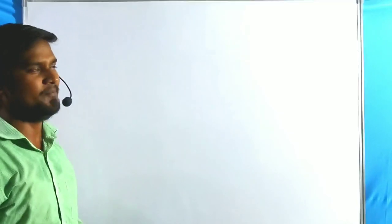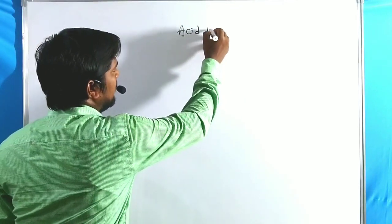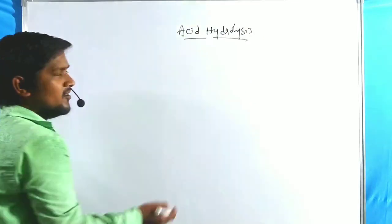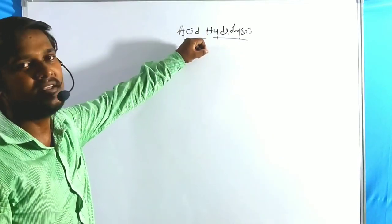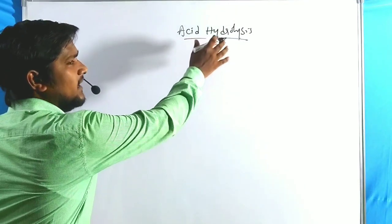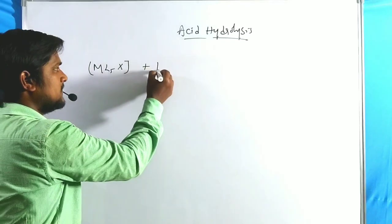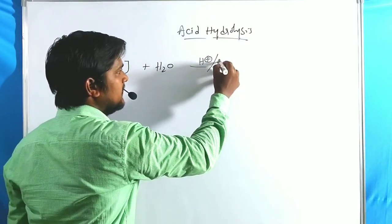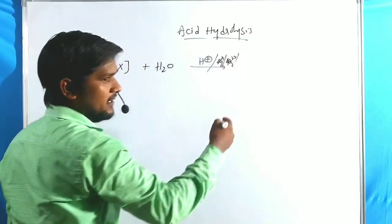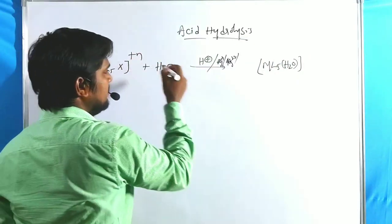Welcome to RPB Resonance Chemistry. We are discussing an important lecture in coordination chemistry, specifically about reaction mechanisms - today's topic is acid hydrolysis. Acid hydrolysis is evidence for substitution reactions which follow the dissociative mechanism. The simplest definition: ML5X, where X is the leaving group, is replaced by a water ligand in the presence of mineral acids or Lewis acids such as Ag⁺, Hg²⁺, or BF₃.